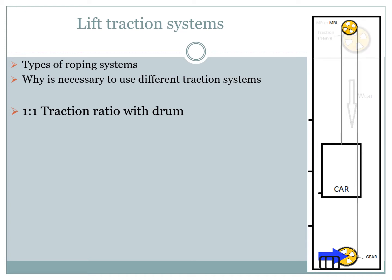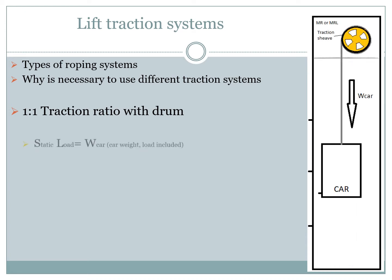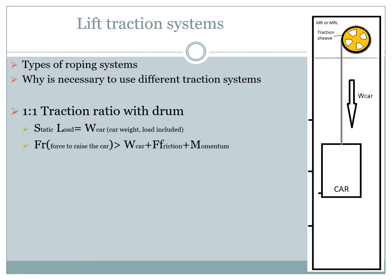In this case, the gear will sustain the entire weight of the car and its load. To lift the car, the force used must be bigger than the car weight with load included, plus additional forces such as momentum or different friction forces. To let down the car, the gear will only need to control the movement by braking the speed of the car descending.